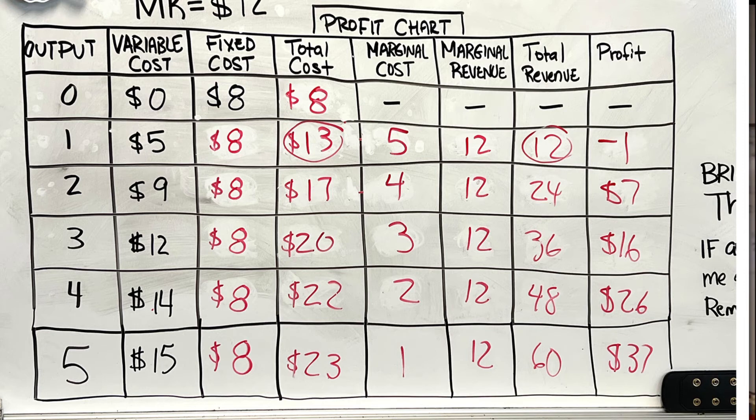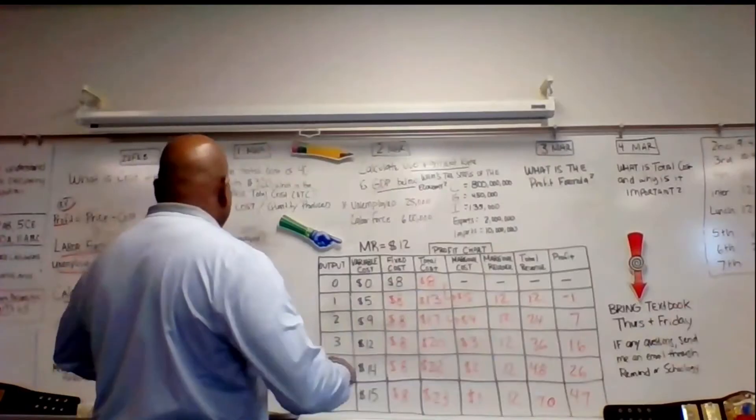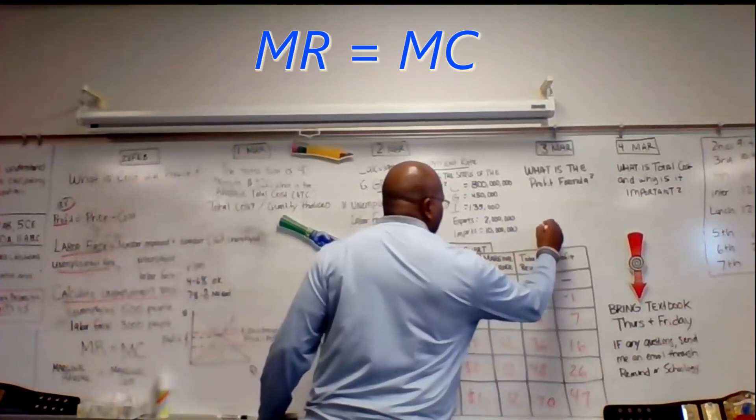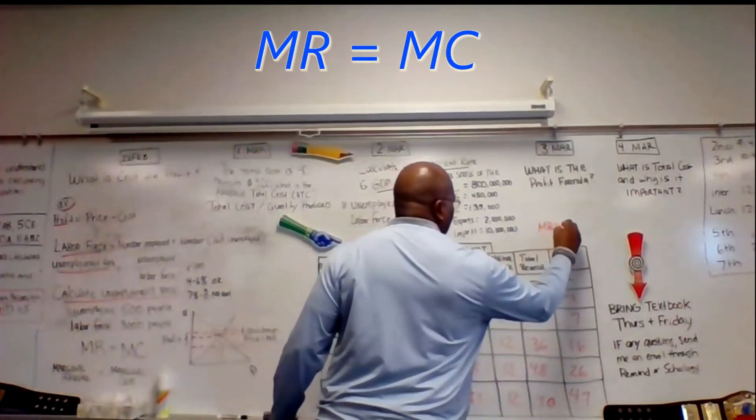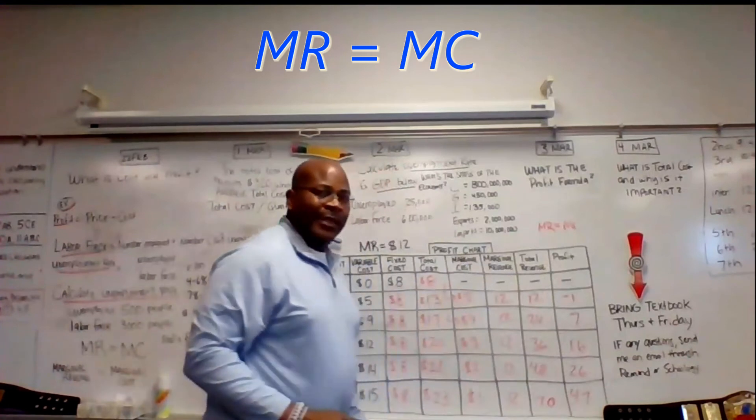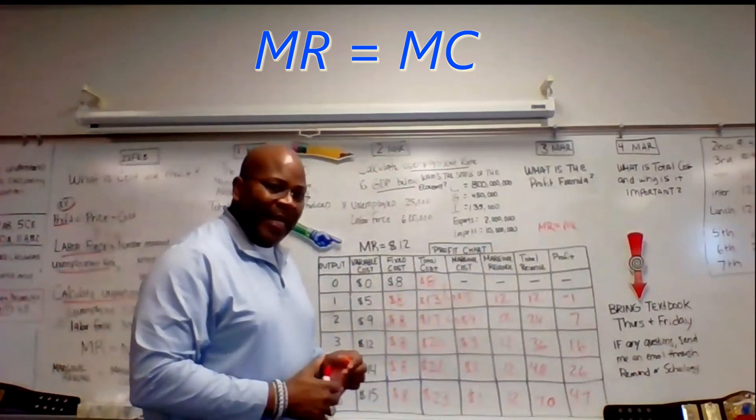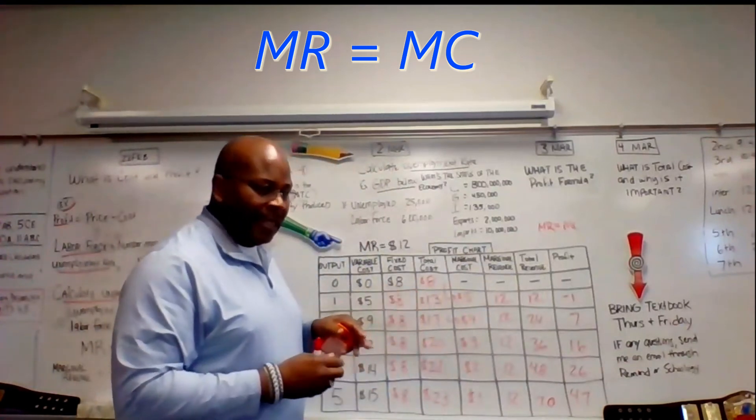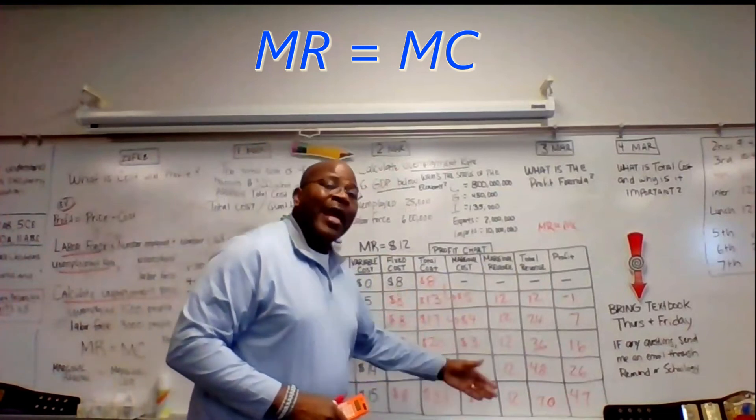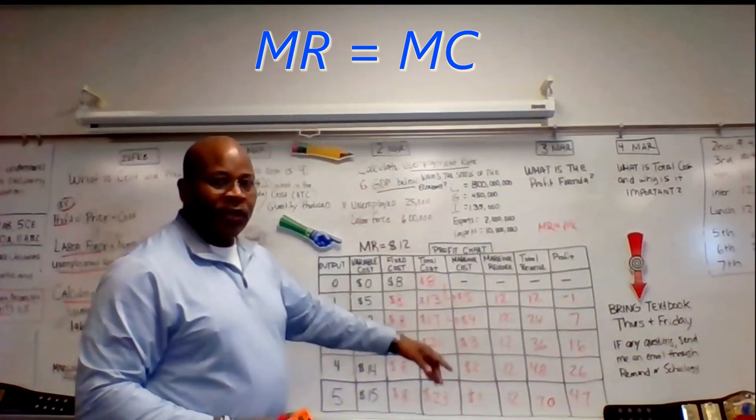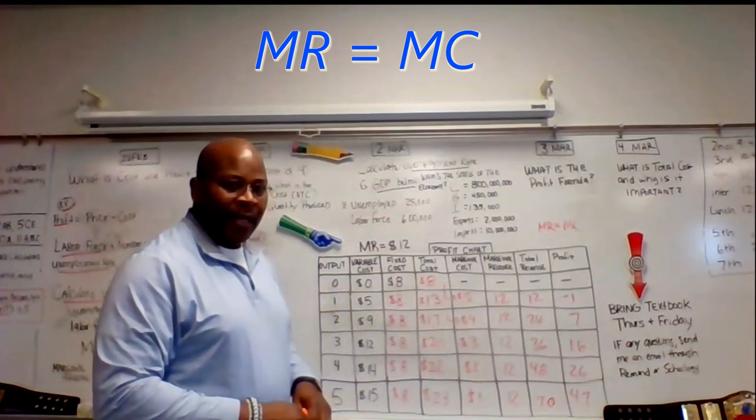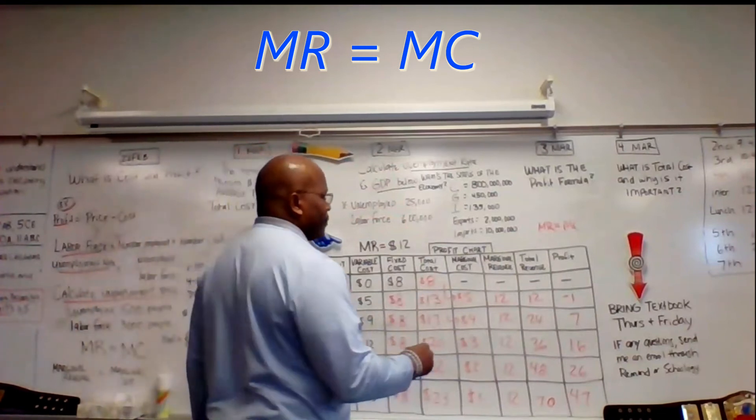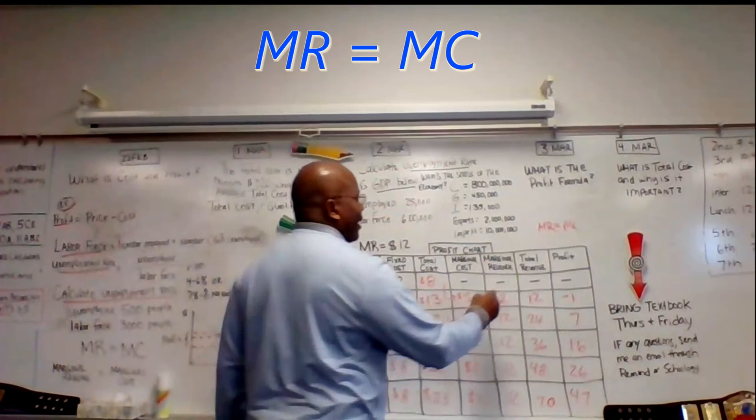But as you know, the equation for profit is MR equals MC. MR equals MC. As long as I'm in that area, MR equals MC, I'm going to have profit. As I go above that, though, I'm going to start losing money. Remember, we're talking about shortages and surpluses.